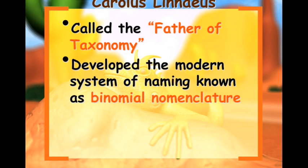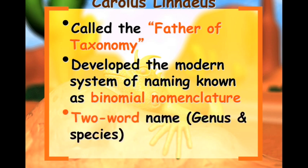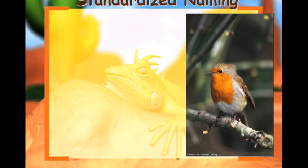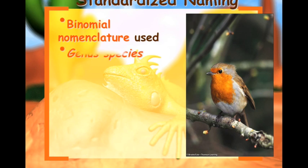He developed the modern system of naming known as binomial nomenclature. It is a two-word name made up of the genus and species. So with standardized naming, we're going to use binomial nomenclature, which is made up of genus and species.